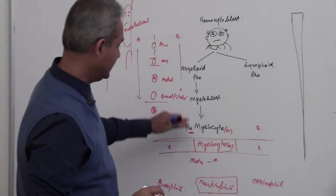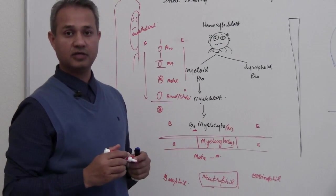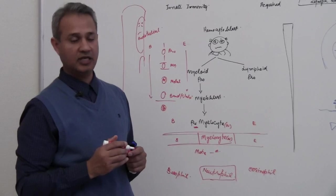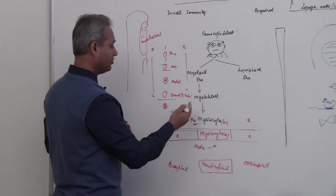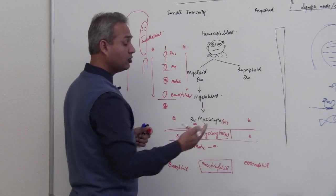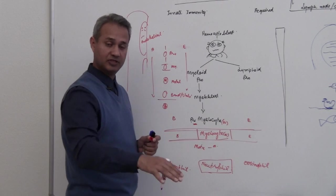That doesn't mean that these stages do not occur in the eosinophil and basophil. Actually all of these granulocytes go through the same stages.